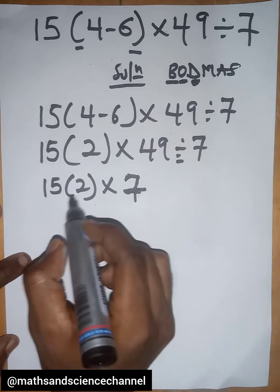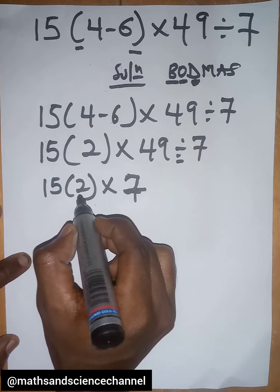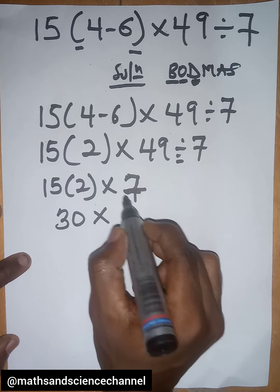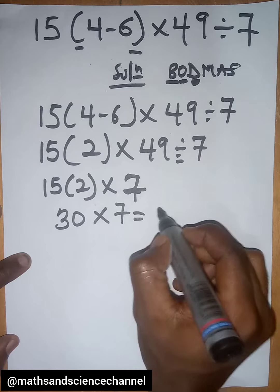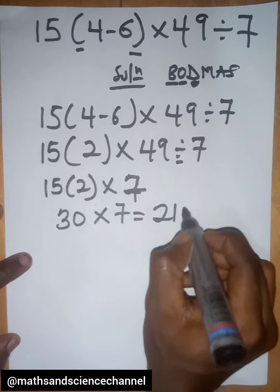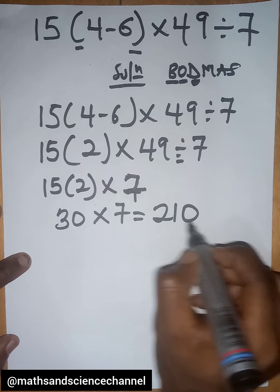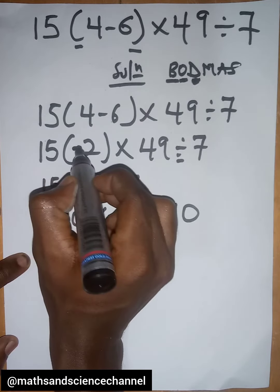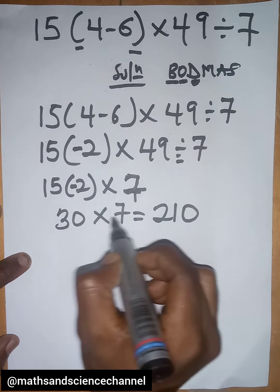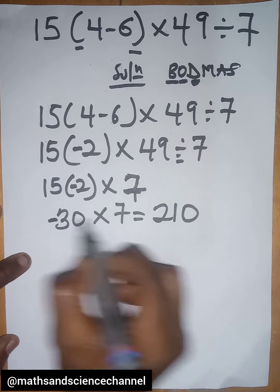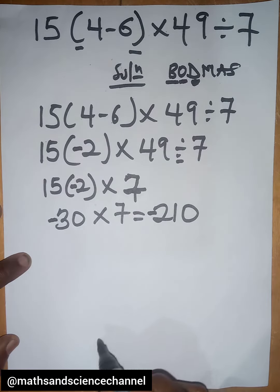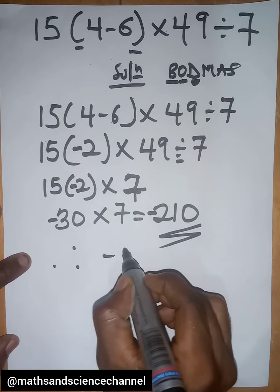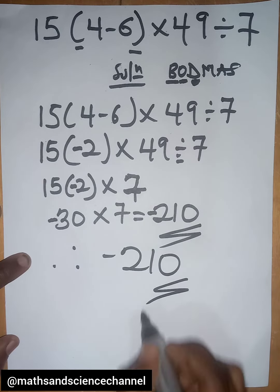15 multiplied by 2 is 30, so we have 30×7, which gives us 210. But remember 4 minus 6 is negative 2, so we have negative 30. Therefore, the answer is negative 210.